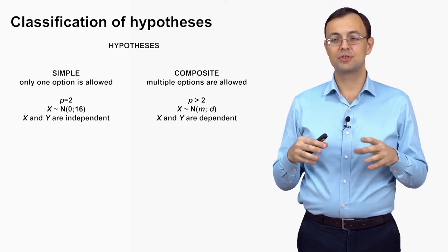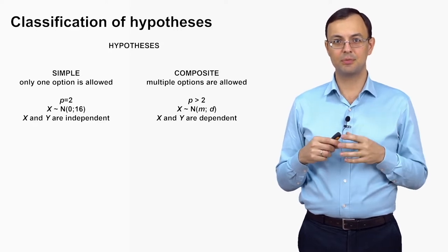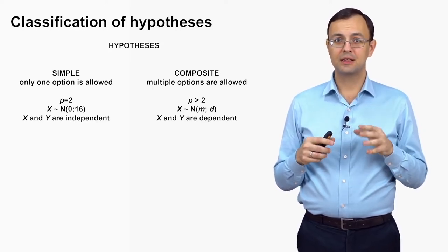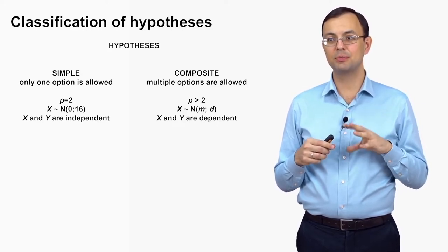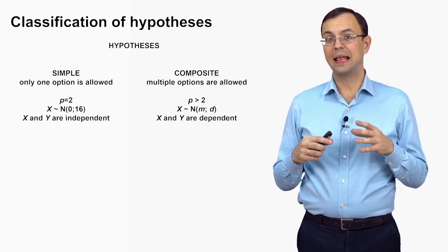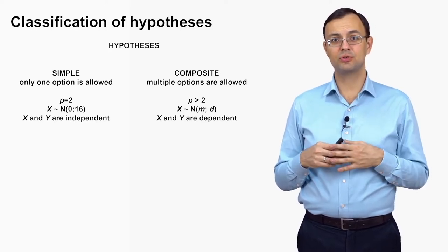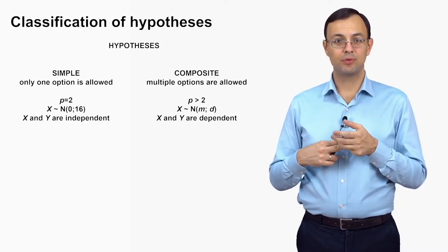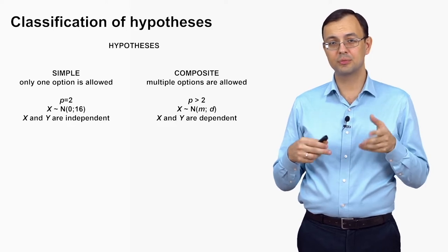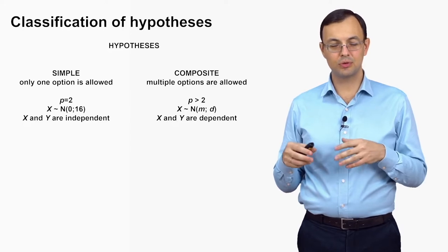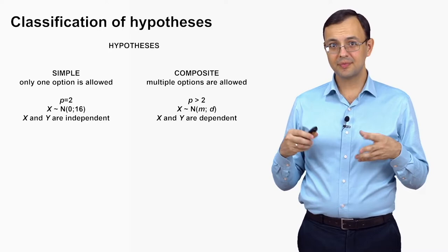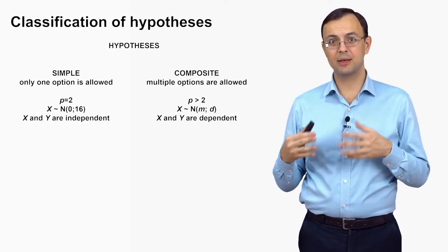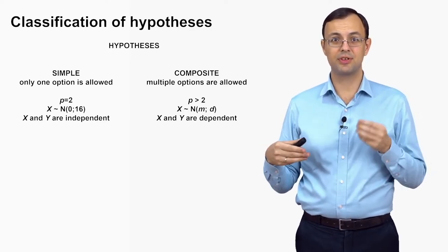Another example: the hypothesis that X follows a normal distribution with parameters 0 and 16 is a simple hypothesis, as only one distribution is allowed. The hypothesis that X follows a normal distribution with any parameters is composite, as multiple distributions are allowed — normal(0,16), normal(2,25), normal(-3,4), and so on. All distributions in that class make the hypothesis true. This distinction is very important, as you will see a bit later.